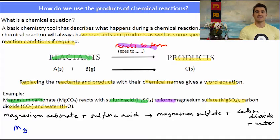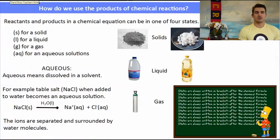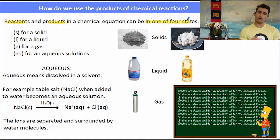If we're asked to write the chemical equation, the chemical equation is when we swap the words out for the chemical symbols. So the formula for magnesium carbonate, MgCO3, plus sulphuric acid, H2SO4, goes to magnesium sulphate, MgSO4, plus carbon dioxide, CO2, plus water.